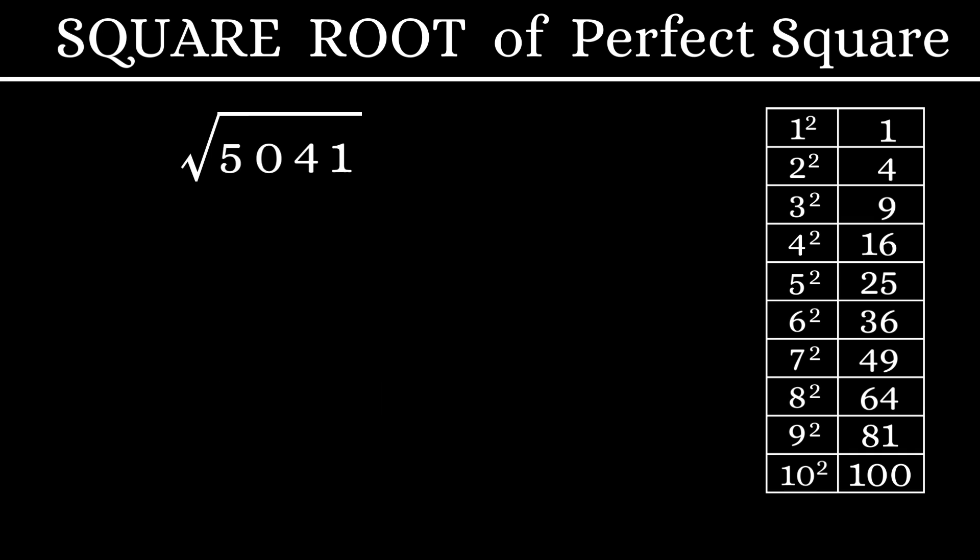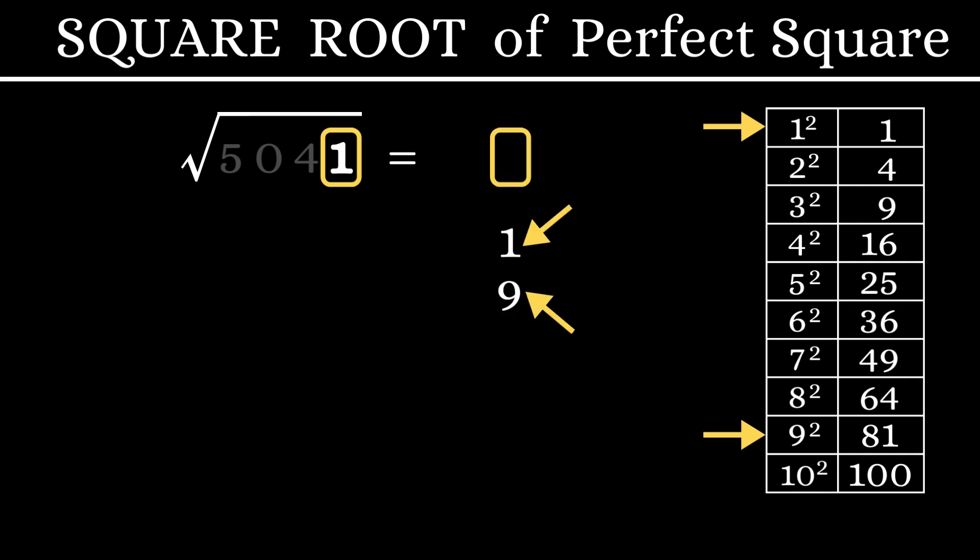Next example, the square root of 5,041. First step, take the units digit 1. You could either have 1 or a 9 in the units place. Let us note it down here.